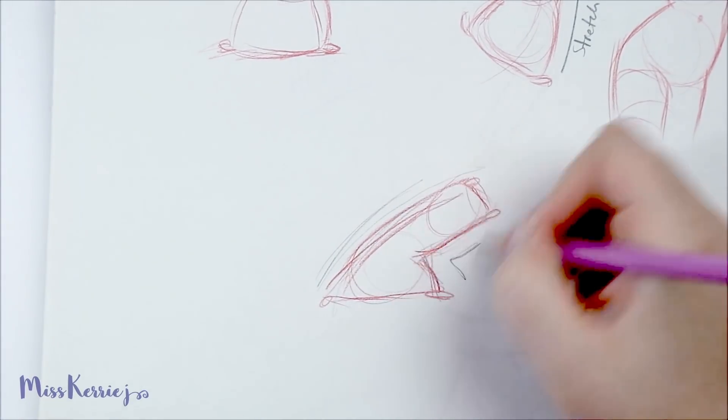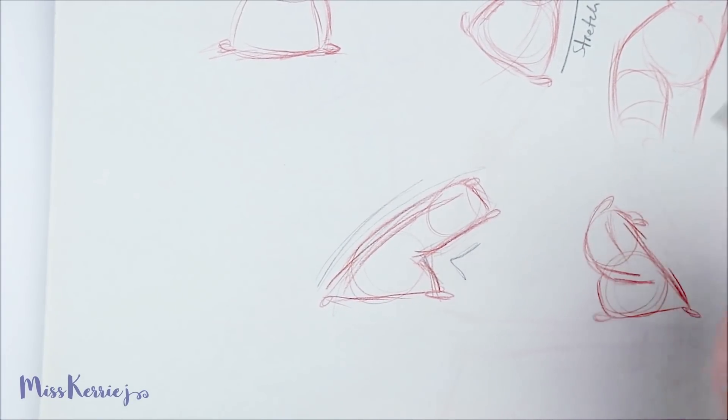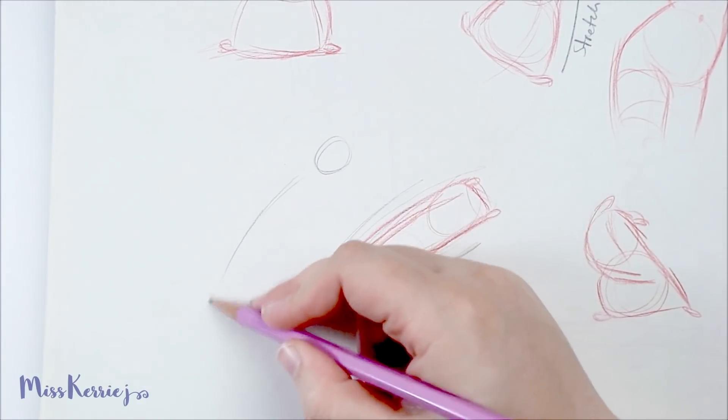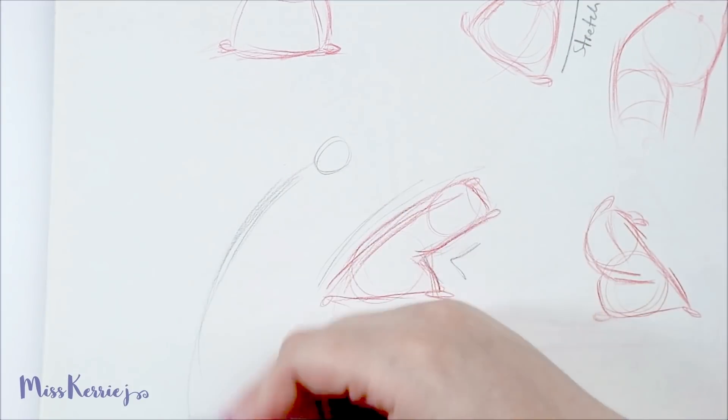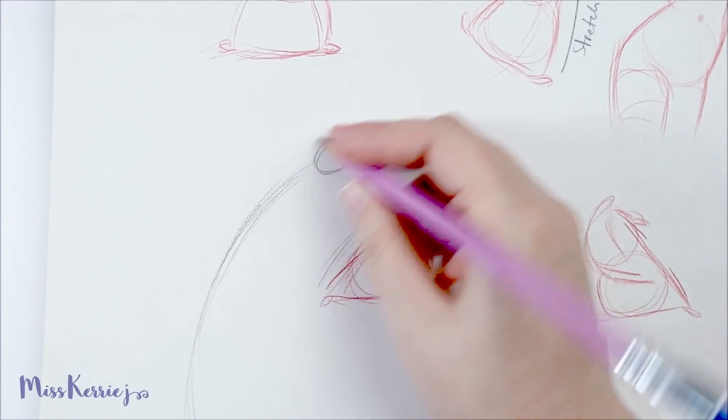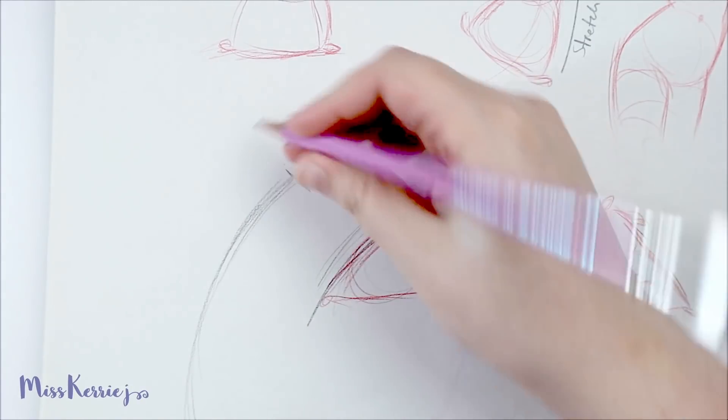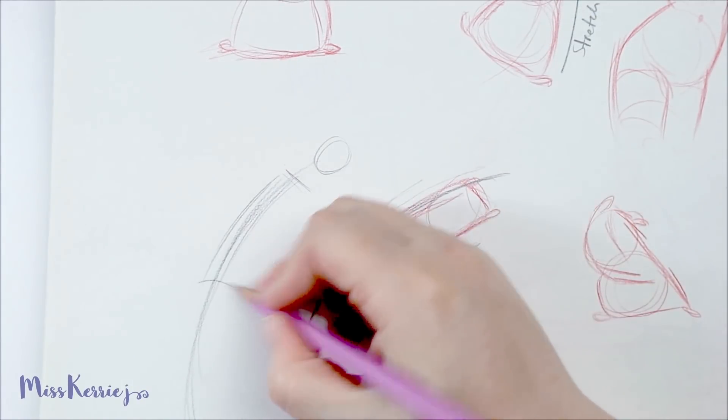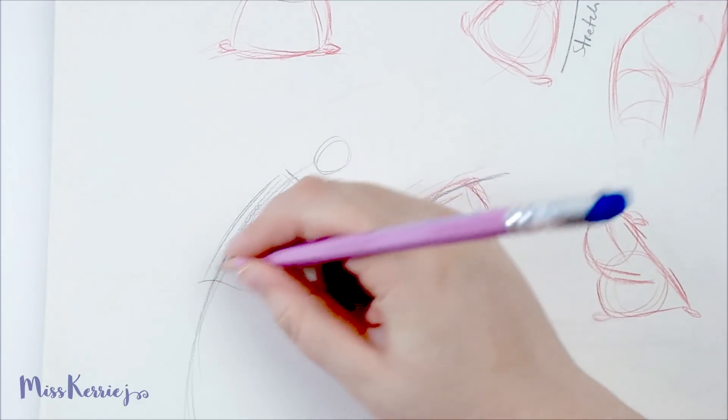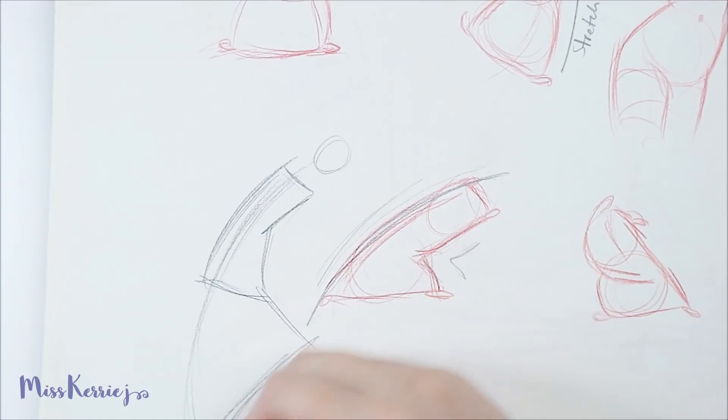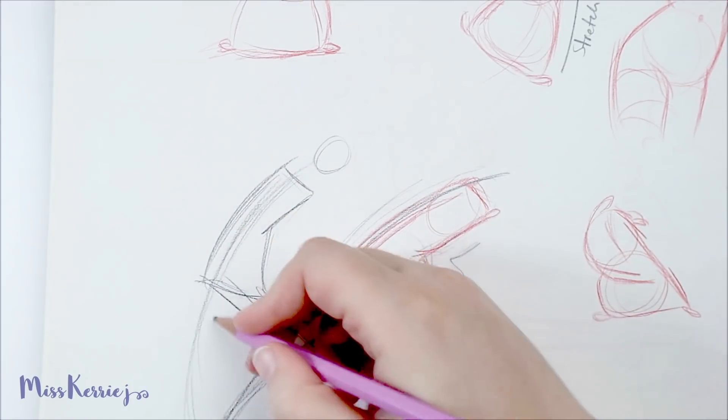If I were to take this flower sack and turn it into a human doing this same pose, I would keep the line of action - this is my line of action right here. So I would just go in and sketch out and you can add whatever you want to this.